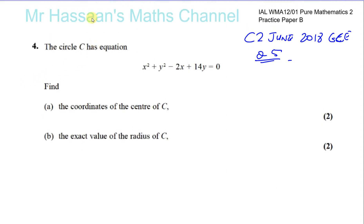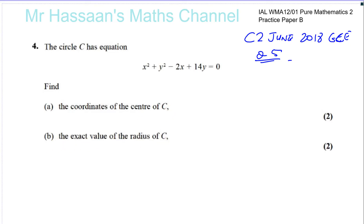Question number four says: the circle C has equation x squared plus y squared minus 2x plus 14y equals 0. We need to find the coordinates of the center of C and the exact value of the radius of C. Both of these can be answered in one step.